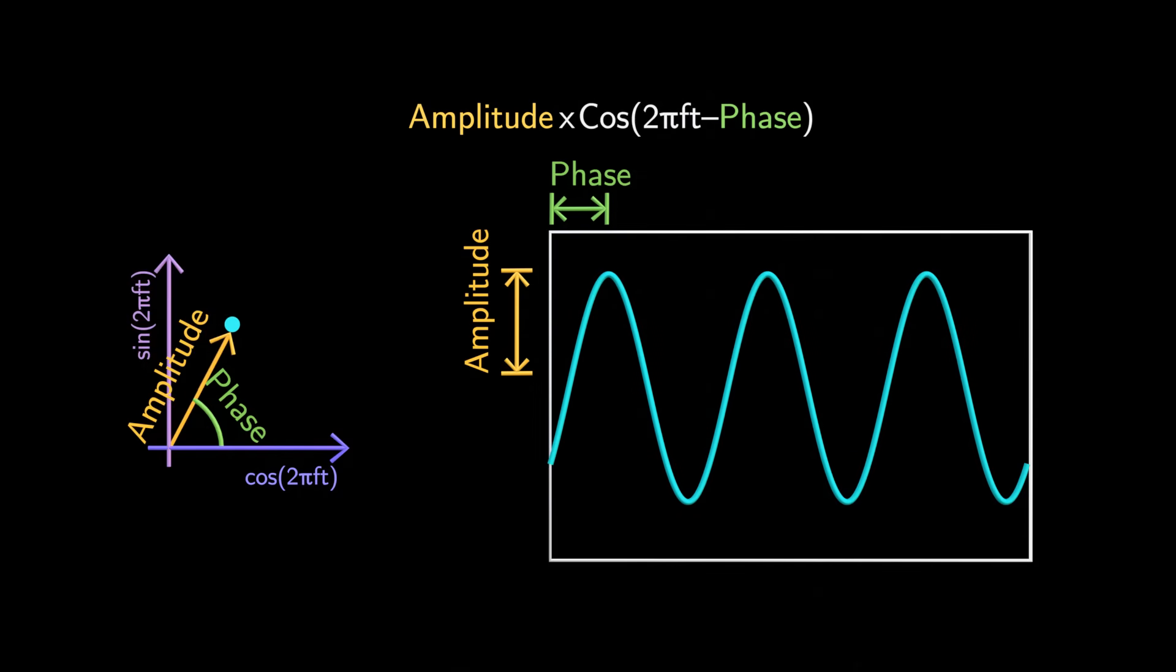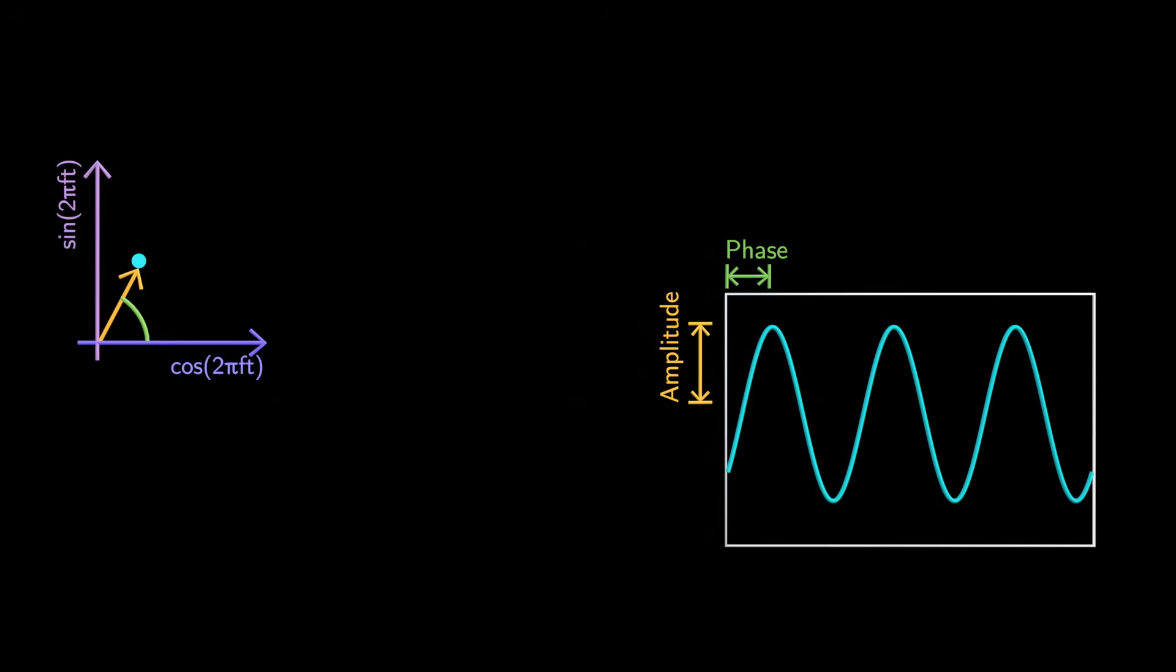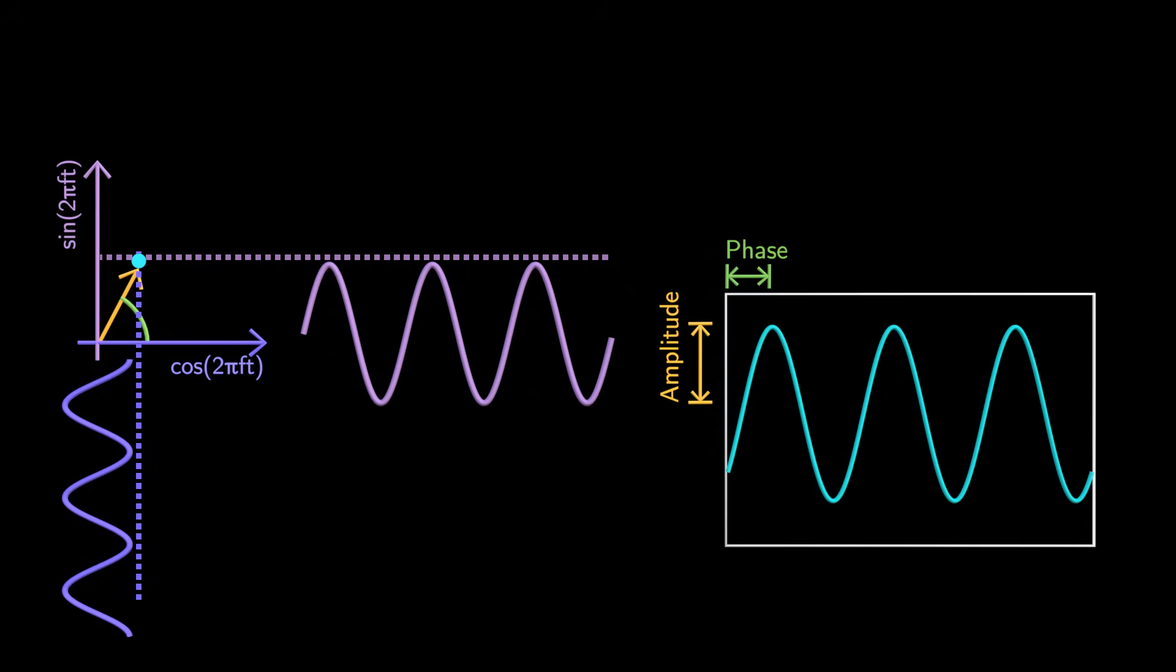Now any wave with any amplitude and phase can be constructed by combining a sine wave and a cosine wave. If you project this vector onto the vertical axis, you get the sine component. Similarly, project it onto the horizontal axis, then you obtain the cosine component. Then add the sine wave and cosine wave. You get the wave with the same amplitude as the vector length and the same phase as the angle of the vector.